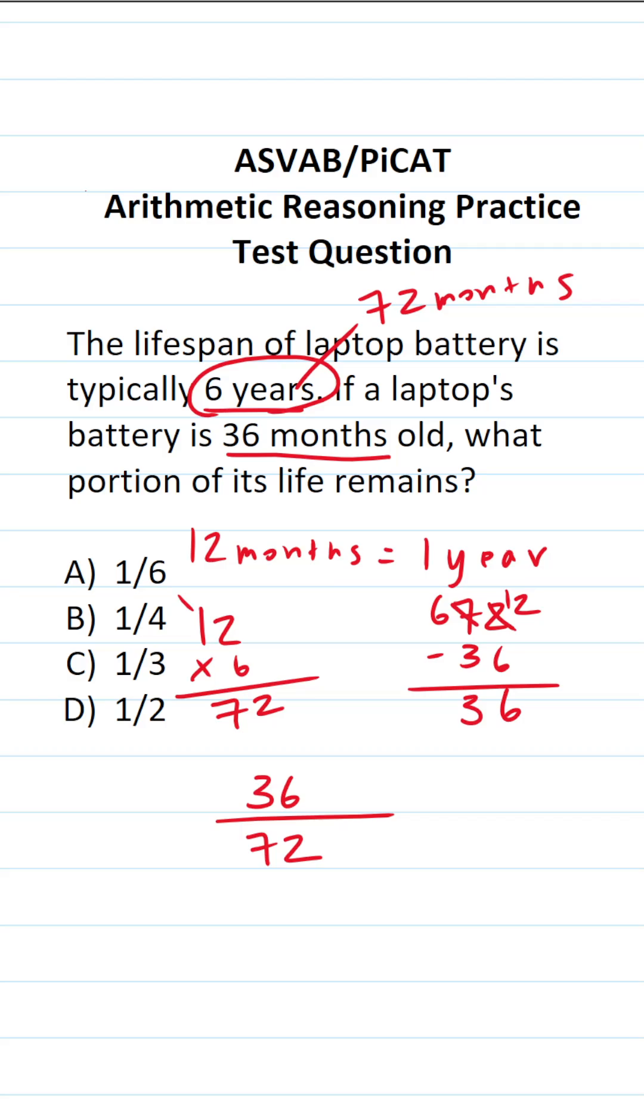To find the portion of its life that's remaining, we're going to reduce this fraction. Now, many of you would say that these have a common factor of 12. 36 divided by 12 is 3. 72 divided by 12 is 6.